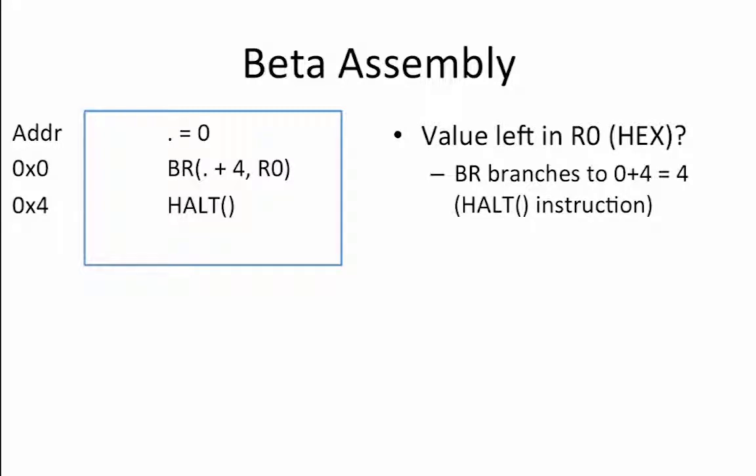In addition to branching to the HALT instruction, a branch instruction also stores the address of the instruction immediately following it into the destination register, R0 in this case. The address of the next instruction is 4, so R0 equals 0x4.